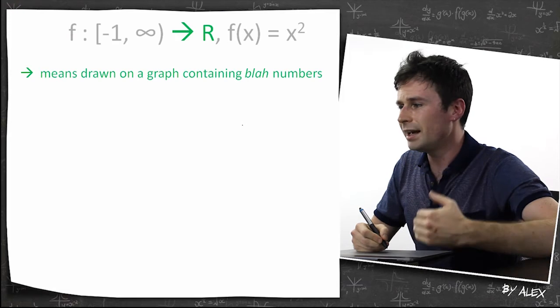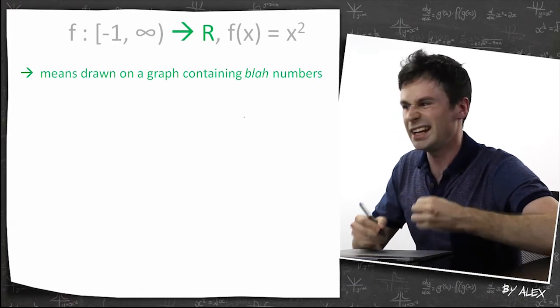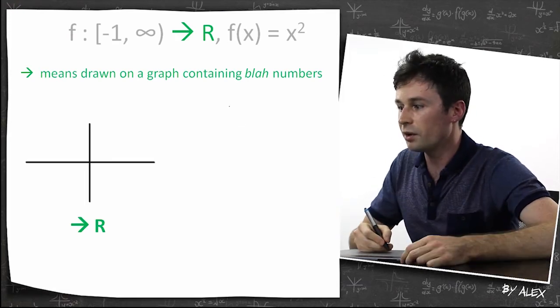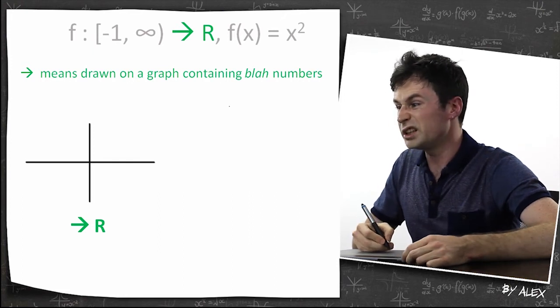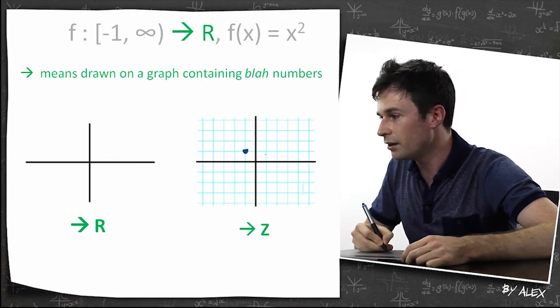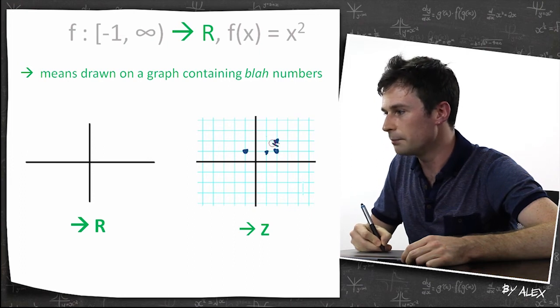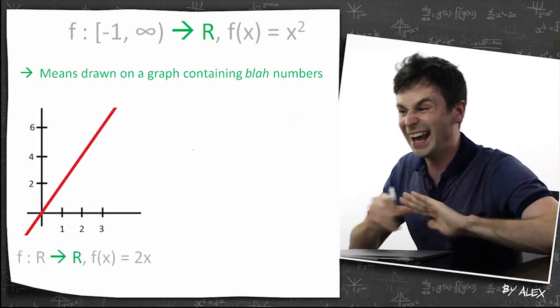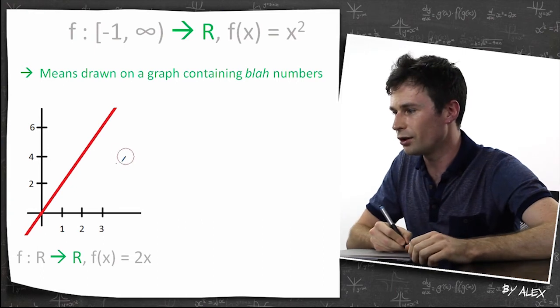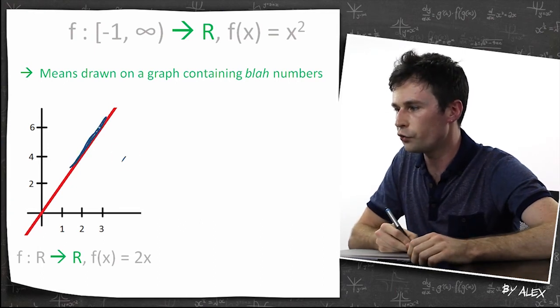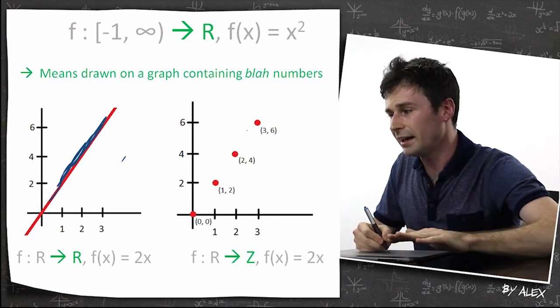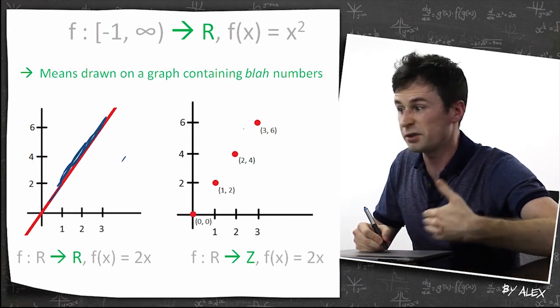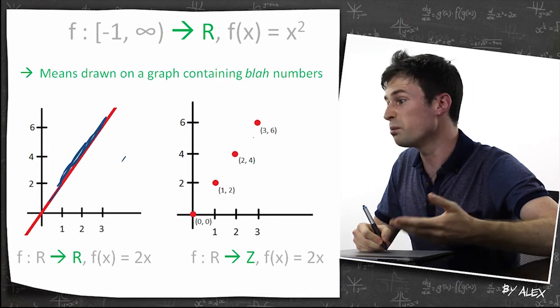This symbol basically means 'drawn on a graph containing blah numbers'. If you have something drawn on every number, it would basically be anything. But if it was only drawn on integers, it could only be these numbers here, but it couldn't be anything in between. This is drawn on a graph which can contain any number, so it can be anything along this line. You can see the line is nice and smooth and covers every number. Whereas exactly the same thing drawn on a graph which only had integers would look more like this.